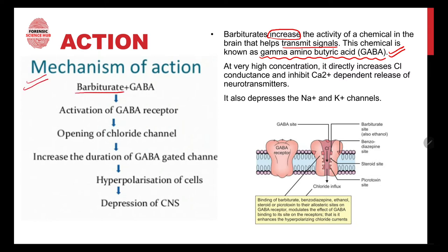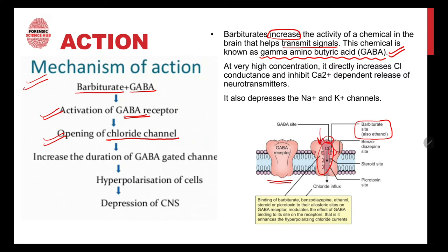Looking at this figure, barbiturates attach themselves to GABA, which leads to activation of the GABA receptor. The GABA receptor has a barbiturate binding site on it. A barbiturate comes and attaches itself to that site, which leads to activation of the GABA receptor and further leads to opening of the chloride channel. A large amount of chloride goes inside the cell, increasing the duration of the GABA-gated channel. More and more chloride enters, causing hyperpolarization of the cells, which leads to depression of the central nervous system.